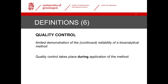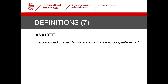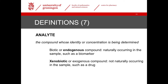Quality control can actually be seen as a limited ongoing validation during the actual analysis of study samples. Another definition is that of analyte — this refers to the compound that we are quantifying. It can occur naturally in the sample, and then it's called a biotic or endogenous analyte; examples are hormones, enzymes, and other biomarkers. When it's not naturally present in the sample, an analyte is called a xenobiotic or exogenous compound, and most drugs belong to this class.